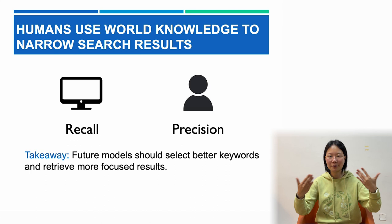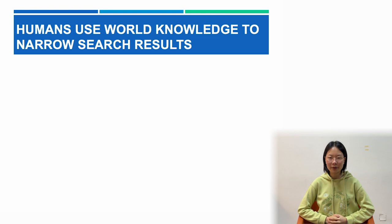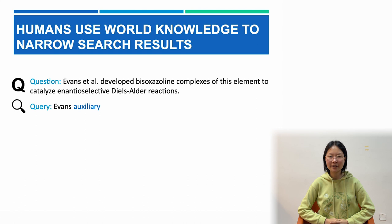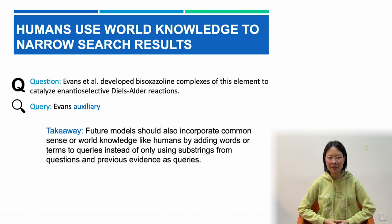Humans use world knowledge to narrow search results. Unlike computers, humans use words that are not in the questions or in evidence to narrow the search scope, and sometimes they even directly query the answer or include shortcuts to the answer. In this example, the contestant's first query is derived from the question, but uses auxiliary knowledge, recognizing that treating a compound makes it an auxiliary in the reaction. Our takeaway is that future models should incorporate common sense or world knowledge, like humans, by adding words or terms to queries instead of only using substrings from questions and previous evidence.